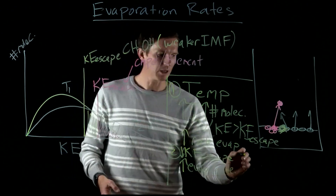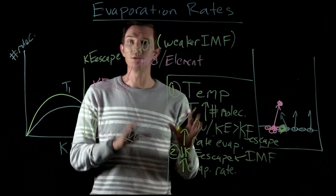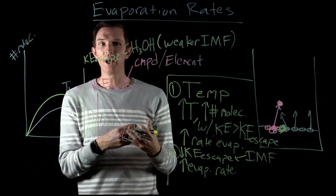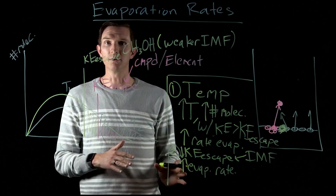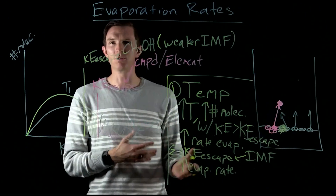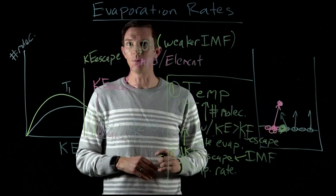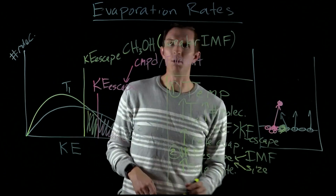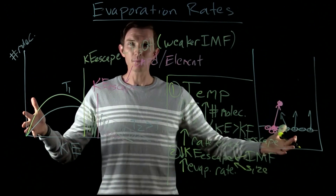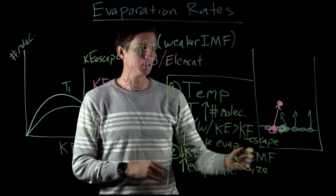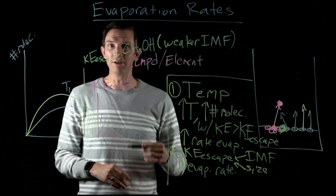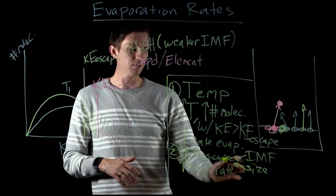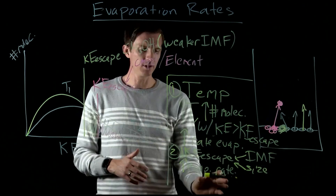The variables that affect escape kinetic energy include intermolecular force strength and molecular size. Methanol has weaker intermolecular force attractions than water, giving it a lower escape kinetic energy and a higher evaporation rate. When comparing molecules with similar IMF strengths, like methanol and ethanol, the larger molecule has a higher escape kinetic energy. So the larger the molecule, the more energy required to escape, and the lower the evaporation rate.